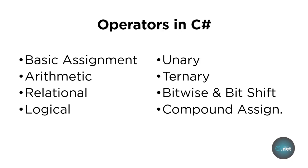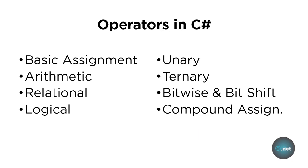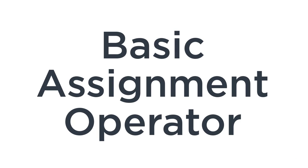Before we start, it's important to know that operators are just symbols that are used to perform operations. For example, if I have five times three, which will result in 15, the multiplication sign is an operator used to carry out the multiplication operation. The basic assignment operator is used to assign values to variables, and for this operator we use the equal sign.